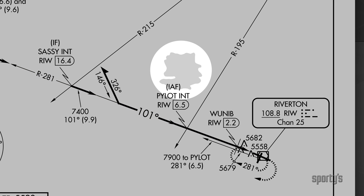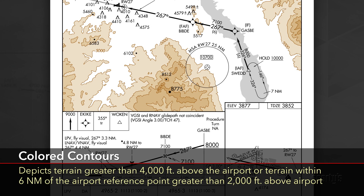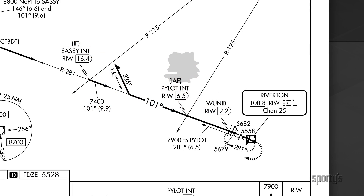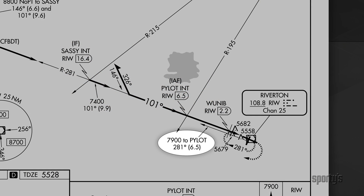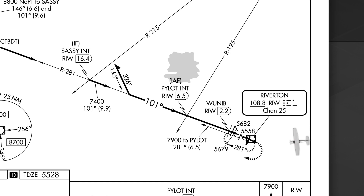That large inkblot on the plan view is Ocean Lake, located northwest of the Riverton Regional Airport. Approach charts show large bodies of water in the plan view. At some airports, high terrain is depicted using colored contours. A minimum altitude, magnetic course, and distance for the course from Riverton VOR to PILOT is given for airplanes transitioning to the approach over the VOR.